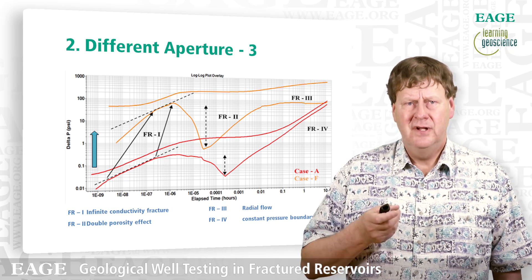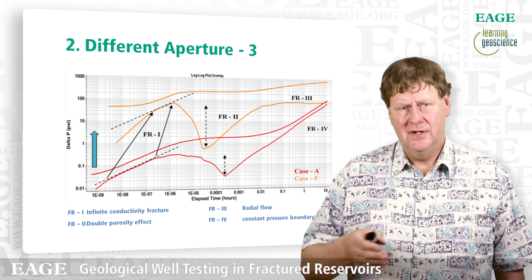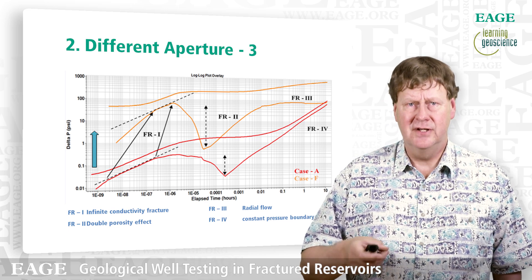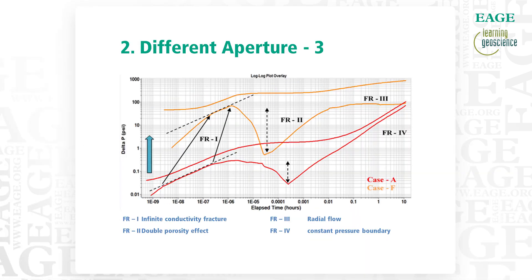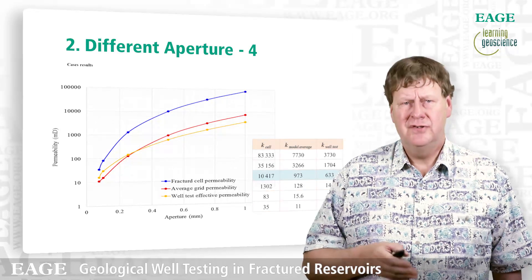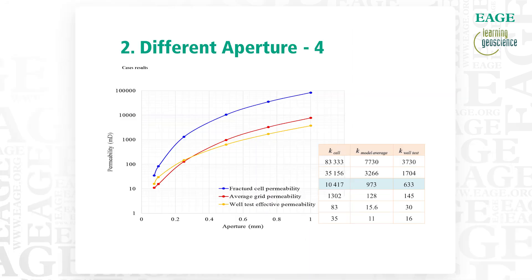What this is showing is that the infinite-conductivity fracture signature appears if you hit the fracture in the well, and then you transfer to a double porosity system where the matrix and fracture are interacting. This would be typical of a Type 2 fracture system with a very high permeability fracture. Note that the well-test permeability tends to be higher than the average permeability of the system when the contrast between fractures and matrix is not very high, and lower than the overall system permeability as the fracture contrast gets higher.